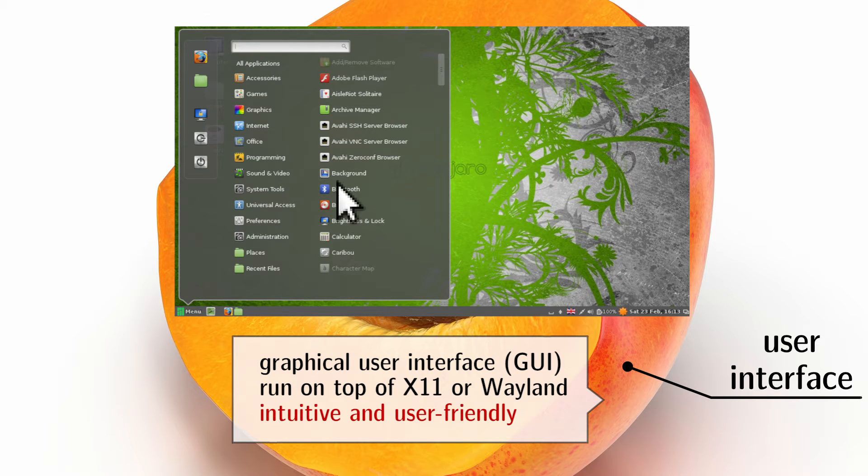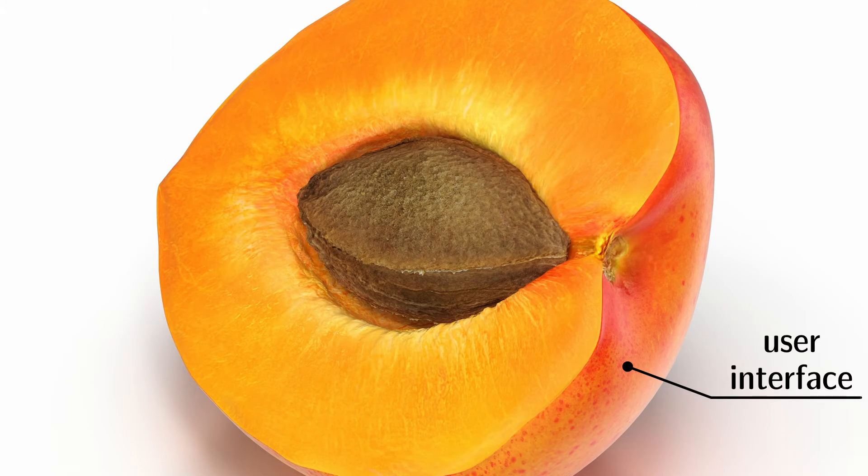When you use your mouse to click on an icon or to choose a command in a menu, you are using a graphical user interface. But the user interface is only the visible part of your system.